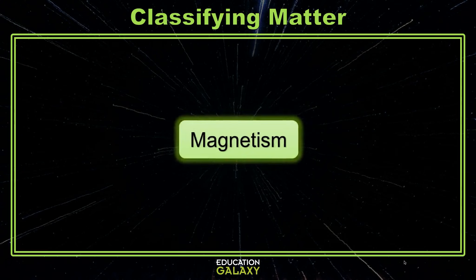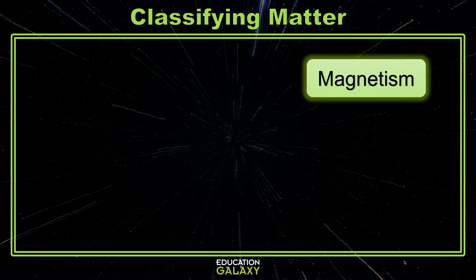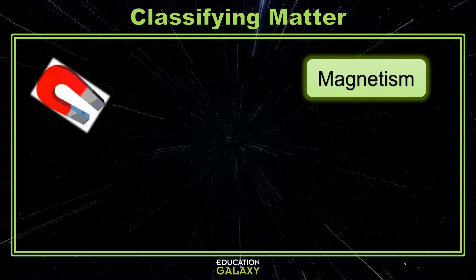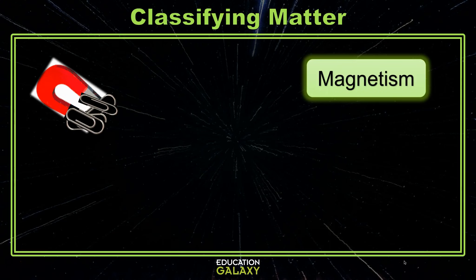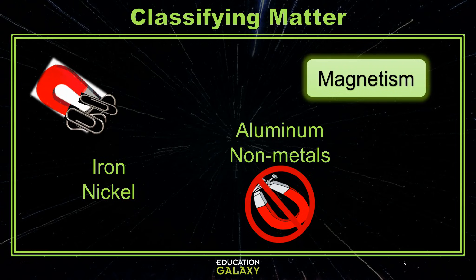Next, magnetism describes a phenomenon where certain materials attract or stick to each other or repel each other. For example, you can pick up paperclips with a magnet because the paperclips are made of steel. Magnets will be attracted to some metals like iron and nickel, but not others like aluminum.